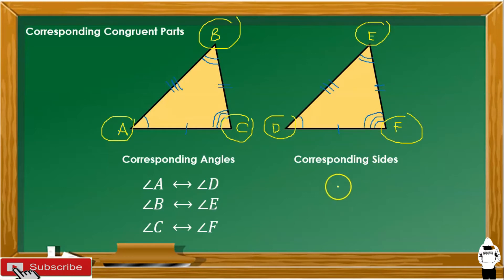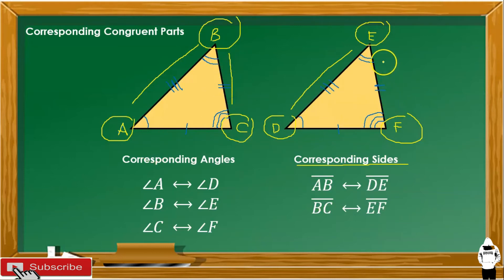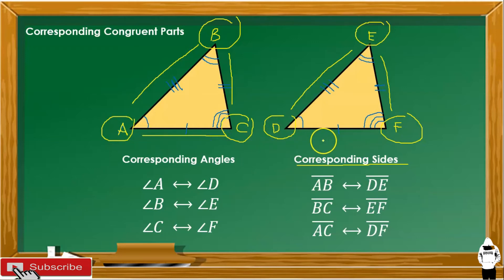Next, corresponding sides. Segment AB corresponds to side DE. Segment BC corresponds to side EF. Segment AC corresponds to segment DF.